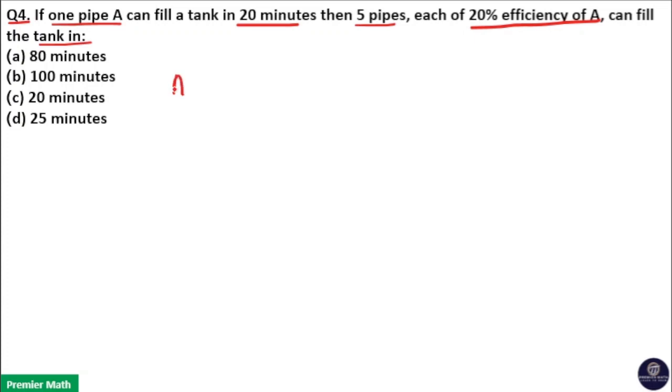Here A can fill a tank in 20 minutes. The question is asking five pipes each of 20% of efficiency of A.